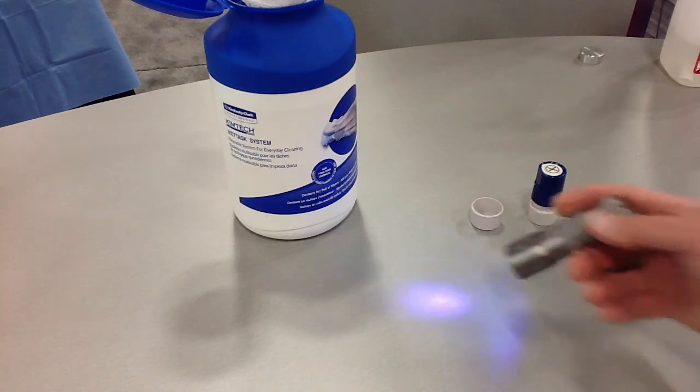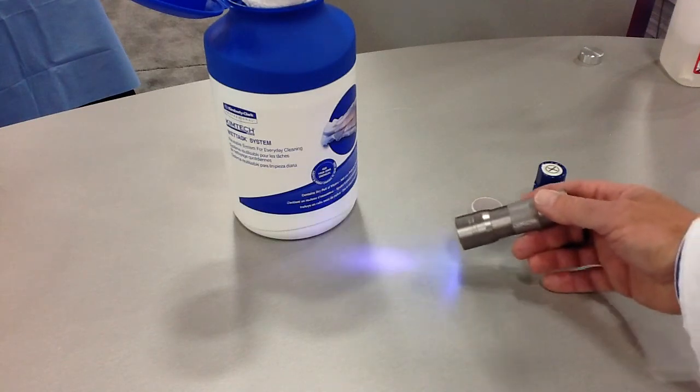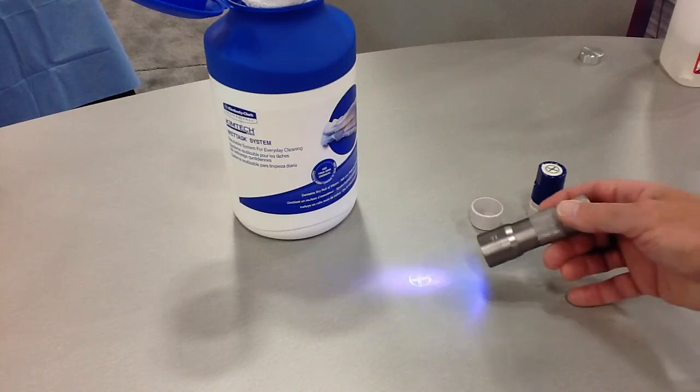You put the marks down at the beginning of the shift, you come back mid-shift. If you shine the light and the mark's still there, obviously that surface hasn't been cleaned properly.